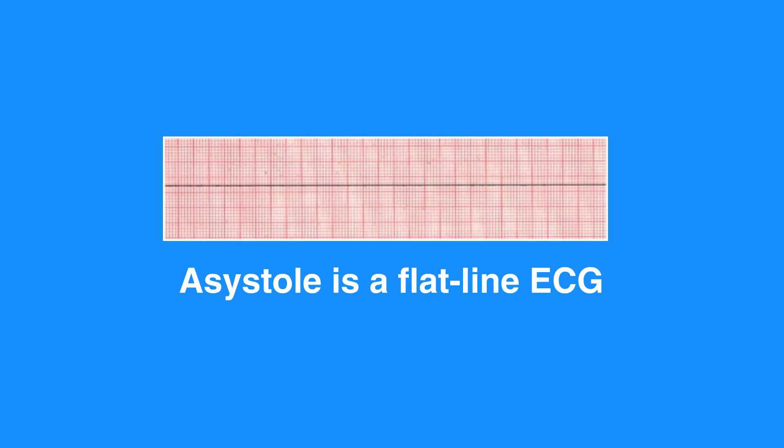Pulseless Electrical Activity and Asystole are related cardiac rhythms in that they are both life-threatening and unshockable. Asystole is a flatline ECG. There may be subtle movement away from baseline, which is considered drifting flatline, but there is no perceptible cardiac electrical activity.